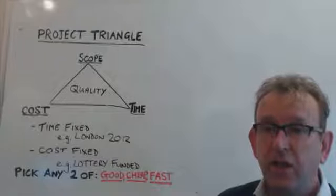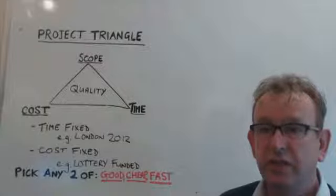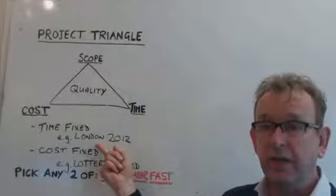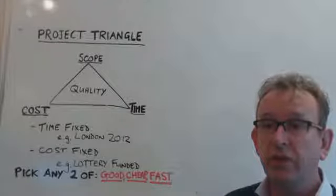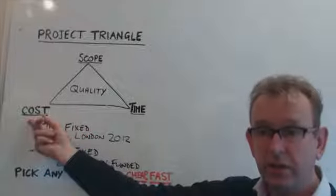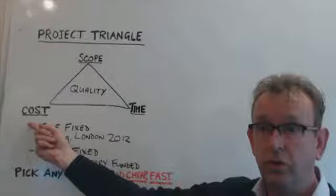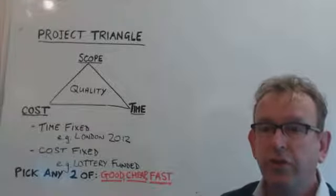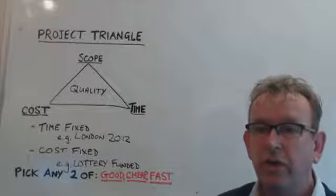Whichever sides of the triangle are flexible and not fixed means that you can look at those flexible sides to recover a problem with the fixed side. For example, if your time-fixed project is going to be delayed, you could look at the other two sides to help recover the situation. One possibility is to increase the cost by employing more people to complete the remaining work on time. Another, more extreme option, is to reduce the scope of the work, so that less work can be done in less time and you can hopefully deliver on time.